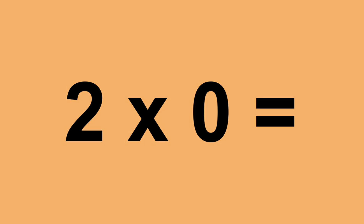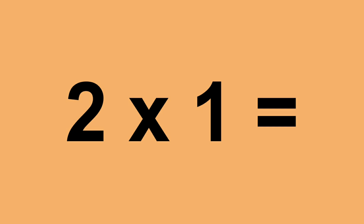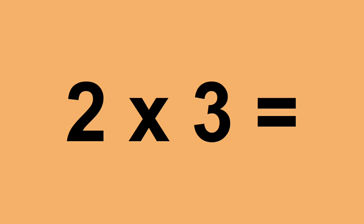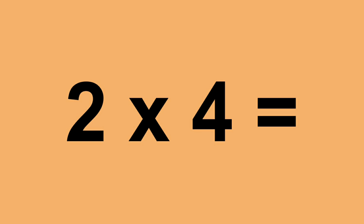Two times zero equals zero. Two times one equals two. Two times two equals four. Two times three equals six. Two times four equals eight.